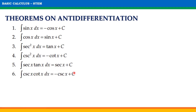And finally, for the sixth one, the indefinite integral of cosecant x times cotangent x with respect to x is equal to negative cosecant x plus C. Let us apply these theorems in solving some indefinite integrals involving trigonometric functions.